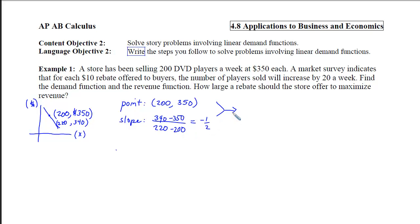Once I have the point and the slope, I can write the equation of the linear demand function as the slope times X minus the X coordinate plus the Y coordinate. If I simplify that, knowing that I'm going to have to compute a revenue, I will get a negative 1 half X plus 100 plus 350 gives me plus 450. I also want to find the revenue function.